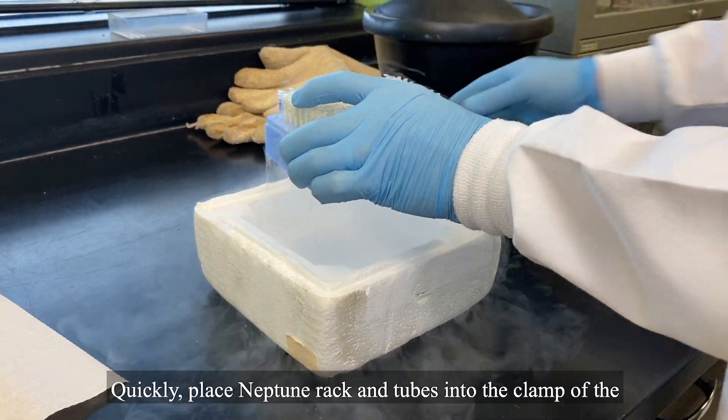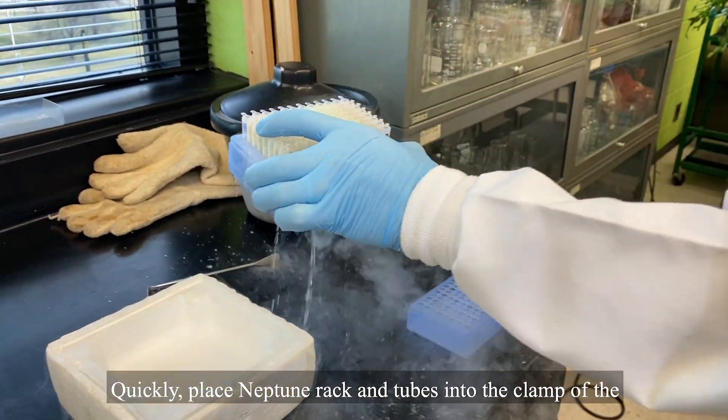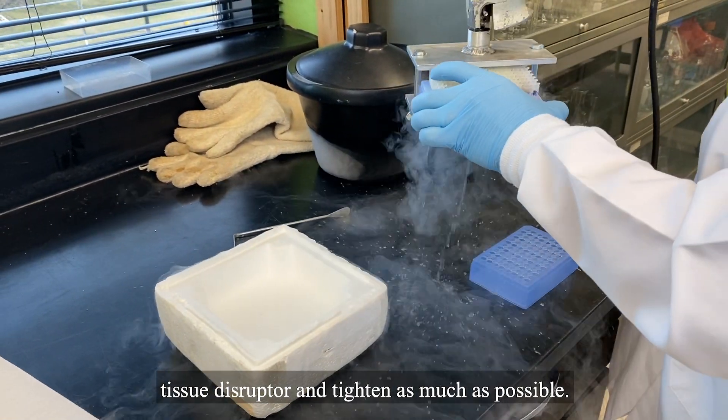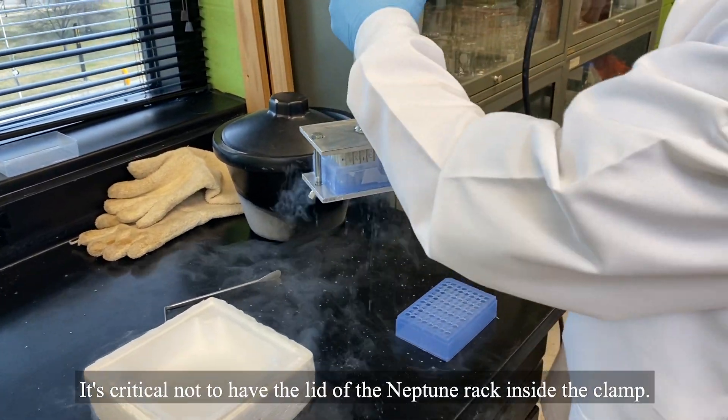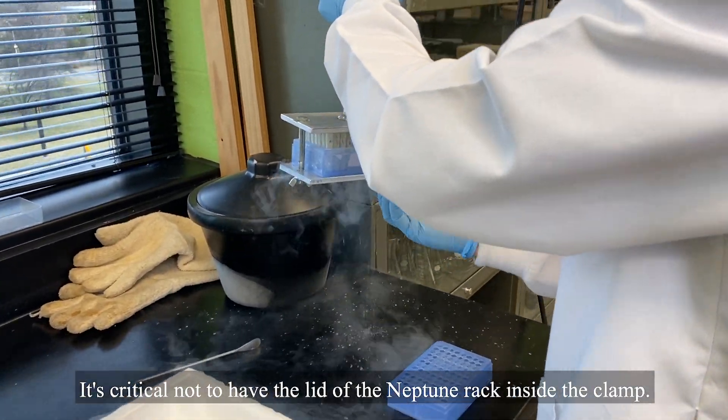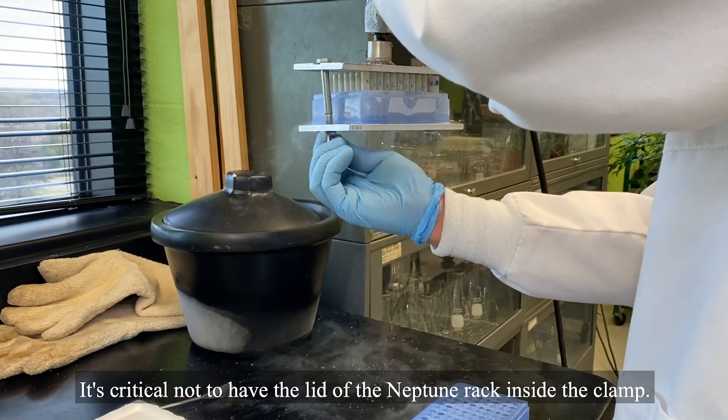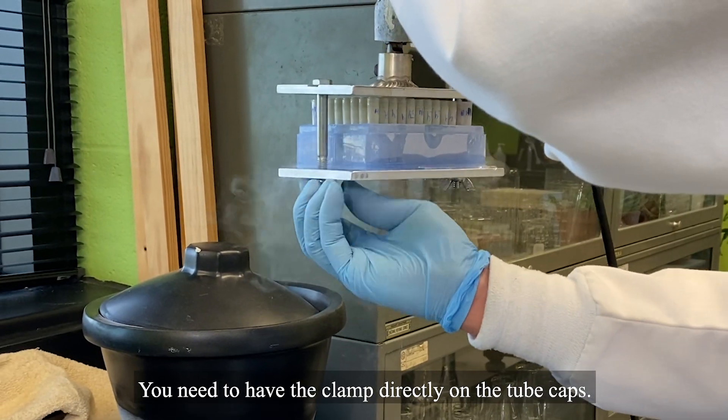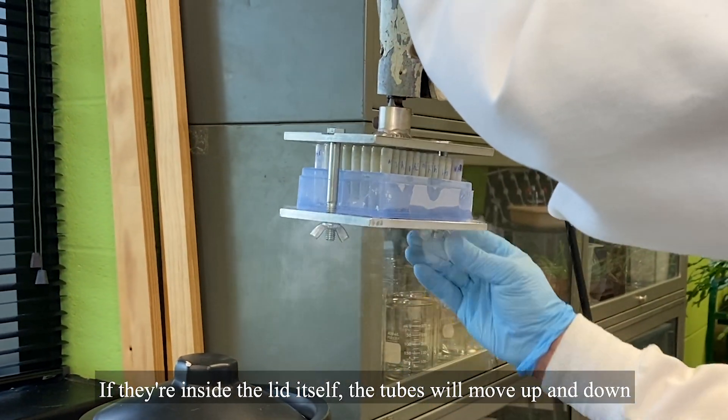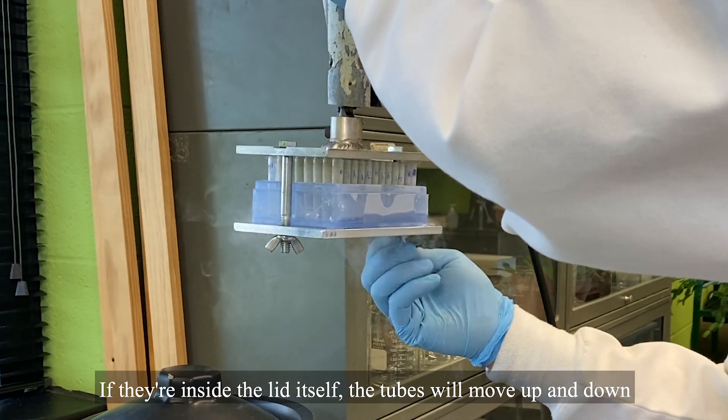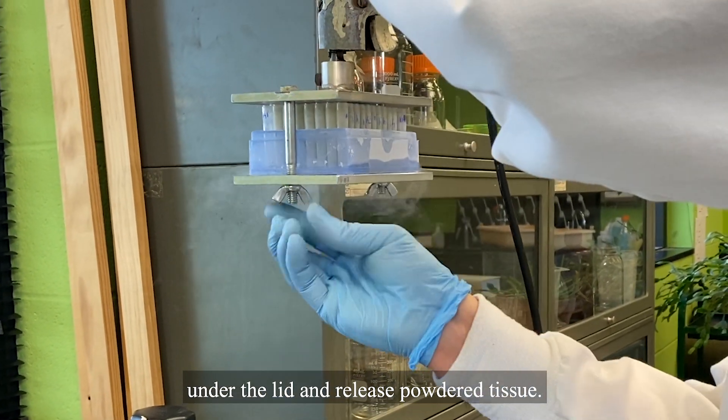Quickly place the Neptune rack and tubes into the clamp of the tissue disruptor and tighten as much as possible. It's critical not to have the lid of the Neptune rack inside the clamp. You need to have the clamp directly on the tube caps. If they're inside the lid itself, the tubes will move up and down under the lid and release powdered tissue.